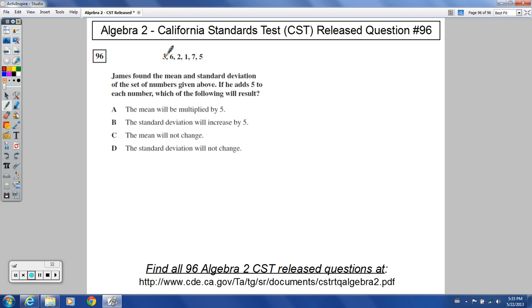So it says we've got these data values: 3, 6, 2, 1, 7, and 5. I see six data values right there, and it says James found the mean and standard deviation of the set of numbers given above. If he adds 5 to each number, which of the following will result? So it looks like we don't actually have to calculate the mean and standard deviation. We just have to think through logically what would happen if we added 5 to each number.